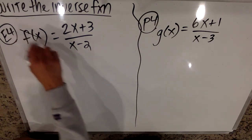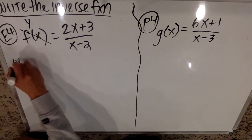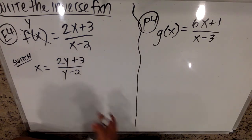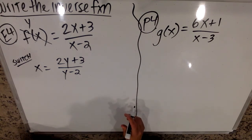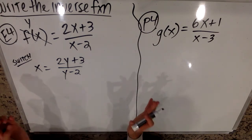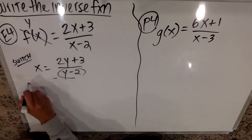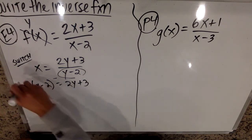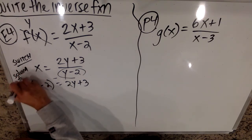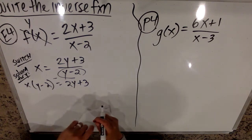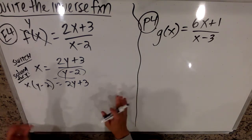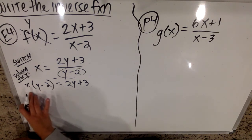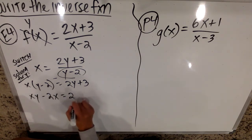So again, the first thing I need to do is recognize that this is actually secretly a Y. So when I switch them, I switch out this Y for an X and change all the X's to Y's. Now the problem is that there are multiple Y's that I need to solve for, and that's tricky. So what I'm going to do is first — nobody likes a fraction — so I'm going to multiply this thing over to the other side and get X times the quantity Y minus 2 equals 2Y plus 3. Remember, since we're solving for Y, X is just a number — just a coefficient.